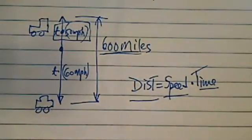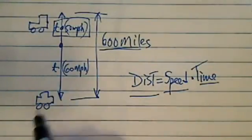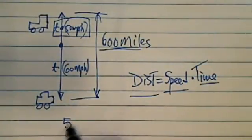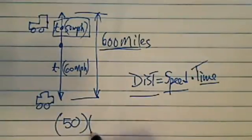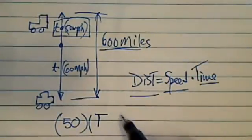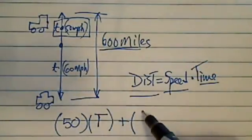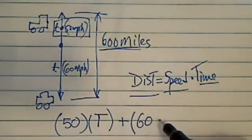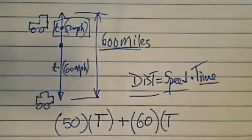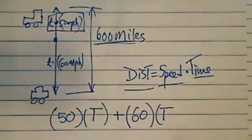Okay, so distance for the car that's going north, that's going slower, it's 50 miles per hour times the time it's going to travel, plus the distance traveling for the southbound car is 60 miles per hour. And they're traveling the same time, same amount of time.